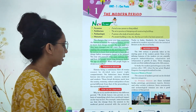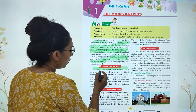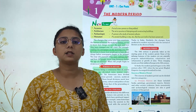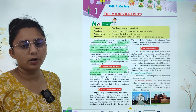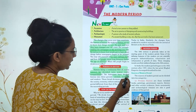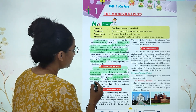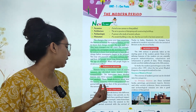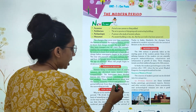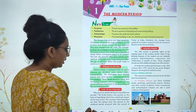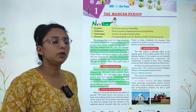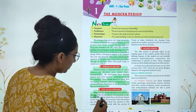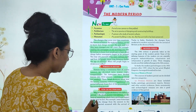History is a continuous flow of events and cannot be divided into watertight compartments. We have divided it into three parts: ancient, medieval, and modern. This broad division marks how our society, economy, culture, and politics developed. Now, how do we decide to divide history into different periods? We divide history into periods on the basis of something that has had a profound impact on the way we live our lives.